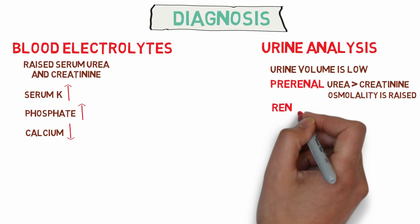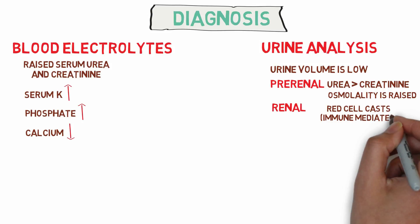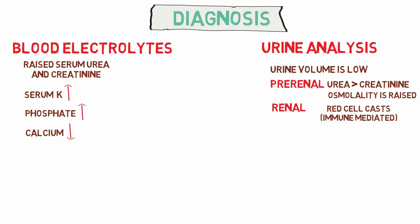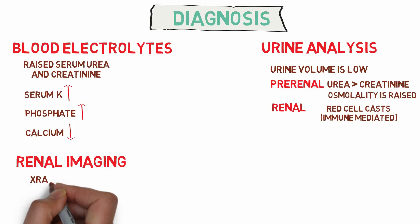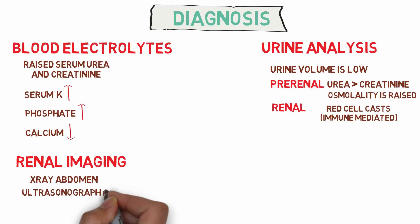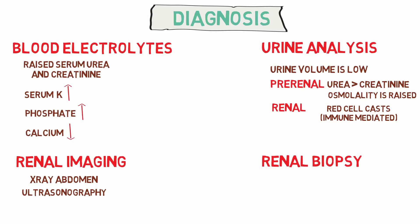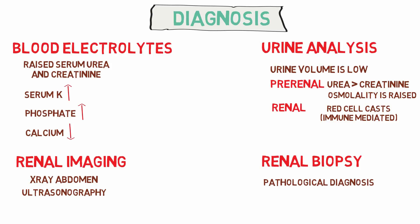In renal ARF we can have red cell casts, which are usually immune-mediated. Renal imaging is also an important modality of investigation, involving X-ray abdomen and ultrasonography, which are helpful in cases of post-renal ARF to detect stones or an enlarged prostate. Renal biopsy helps in the pathological diagnosis of conditions like immune-mediated renal damage.